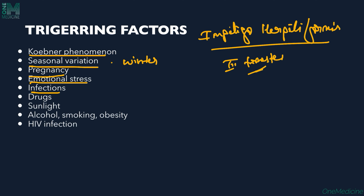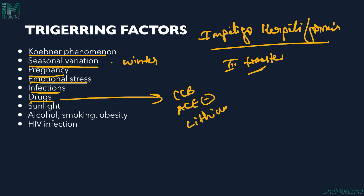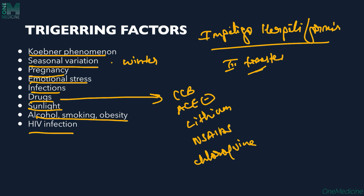Infections can precipitate psoriasis. Certain drugs are important triggers: calcium channel blockers, ACE inhibitors, lithium, NSAIDs, and chloroquine (an anti-malarial) can cause precipitation of psoriasis. Sunlight can exacerbate photosensitive types of psoriasis. Alcohol, smoking, and obesity are also associated. HIV infection increases the risk of developing psoriasis.